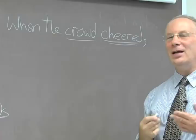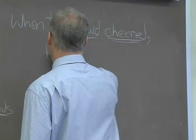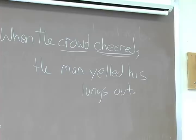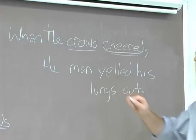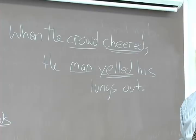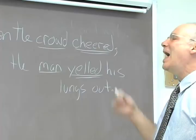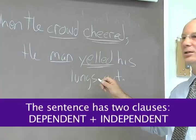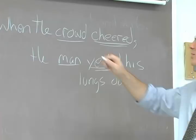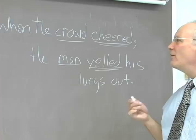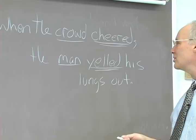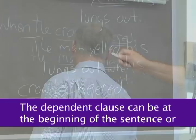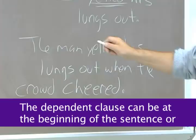'When the crowd cheered, the man yelled his lungs out' — 'the man yelled his lungs out' is another group of words acting as a unit, but it can stand by itself. It has 'man,' it has 'yelled,' so we know it's a clause. This group of words is an independent clause. In analyzing this whole sentence, we would say it has two clauses: the first one is dependent, the second one is independent. 'The man yelled his lungs out' could stand by itself. Notice that we could also move the dependent clause to the end — 'when the crowd cheered' can be at the beginning or at the end of the sentence.